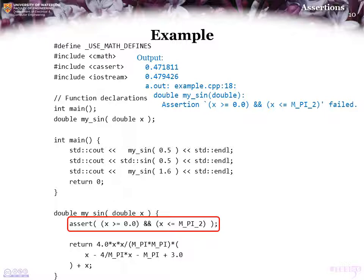That is, x greater than or equal to 0 and x less than or equal to pi over 2, that assertion failed. And so rather than calculate an erroneous answer, the program terminated, and now it is our obligation to go back and see what happened. In this case, the problem was we called my sine with an argument that was outside the interval from 0 to pi by 2.